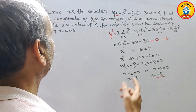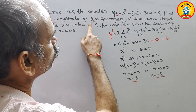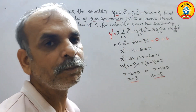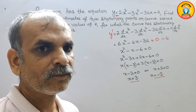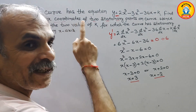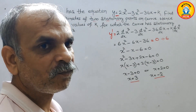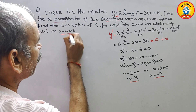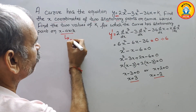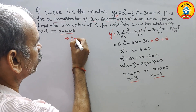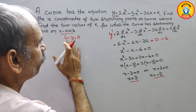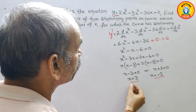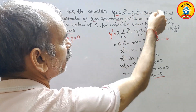Now they have told us: hence find the two values of k for which the curve has stationary points on the x-axis. On the x-axis means y = 0. So if y = 0, we substitute this value into our equation.